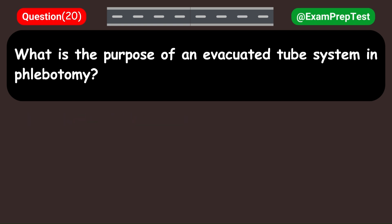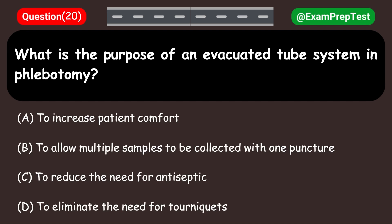What is the purpose of an evacuated tube system in phlebotomy? A. To increase patient comfort. B. To allow multiple samples to be collected with one puncture. C. To reduce the need for antiseptic. D. To eliminate the need for tourniquets. Answer: B. To allow multiple samples to be collected with one puncture.